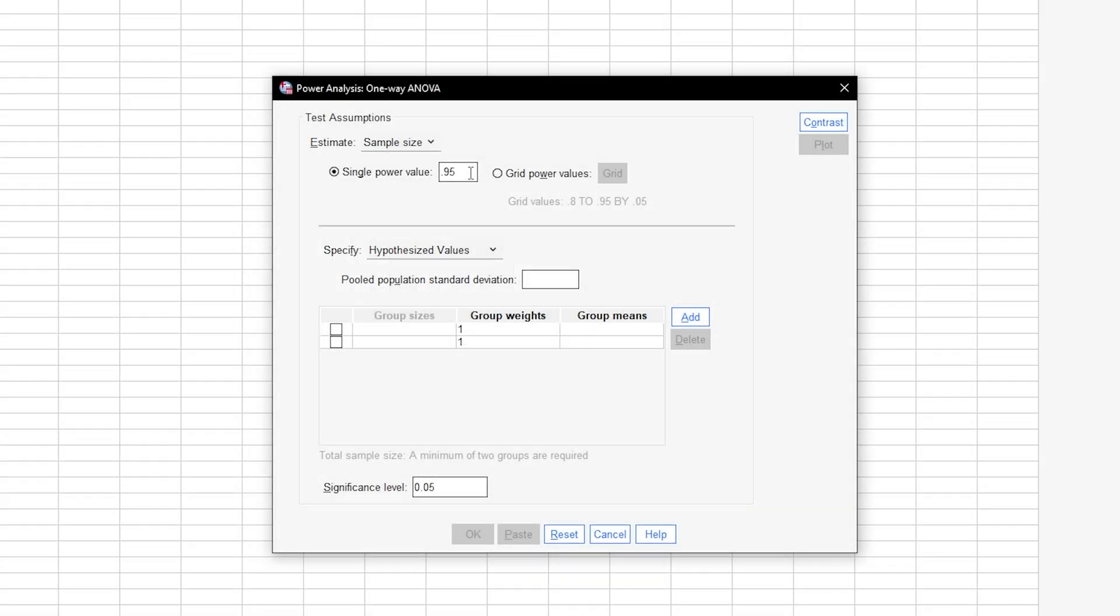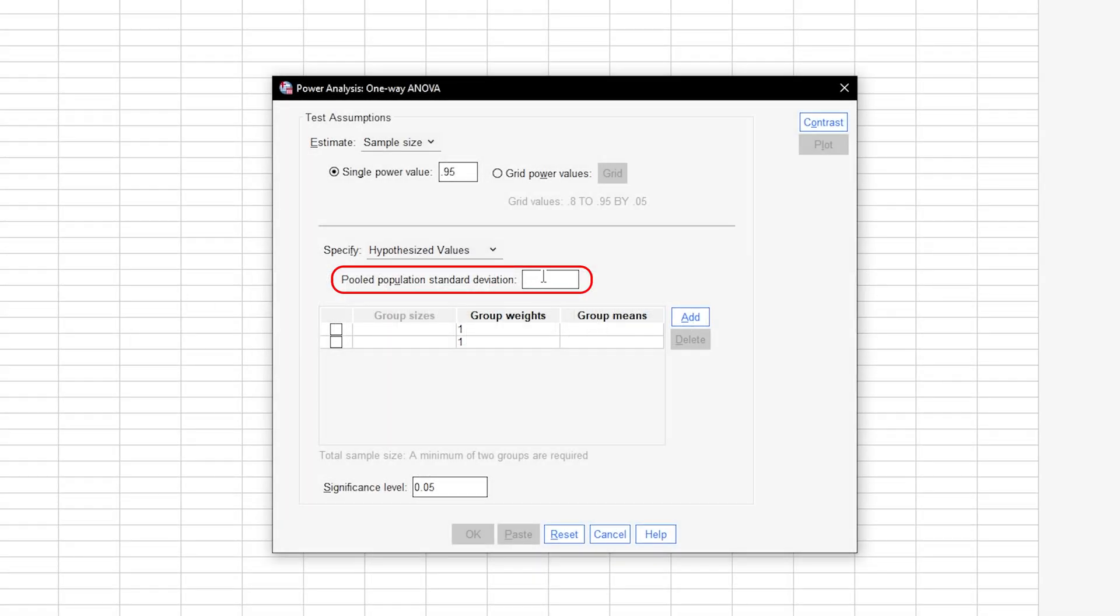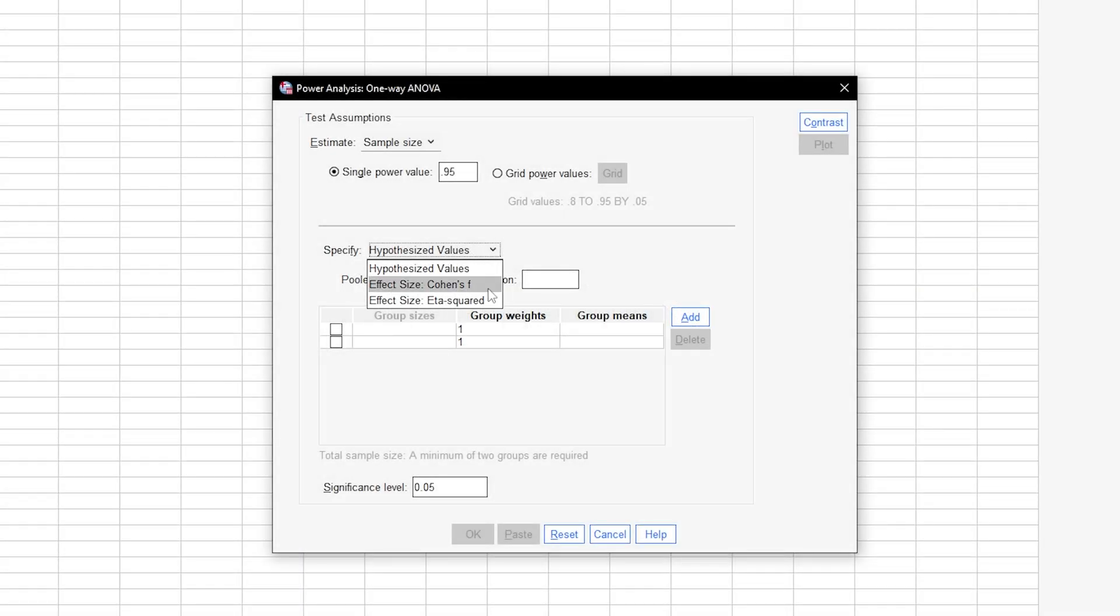Thirdly, you have to specify either a hypothesized value or one of two effect sizes. If you have information about the pooled population standard deviation, you can use it here. However, the pooled population standard deviation is most likely unknown and you will use known effect sizes from comparable studies.